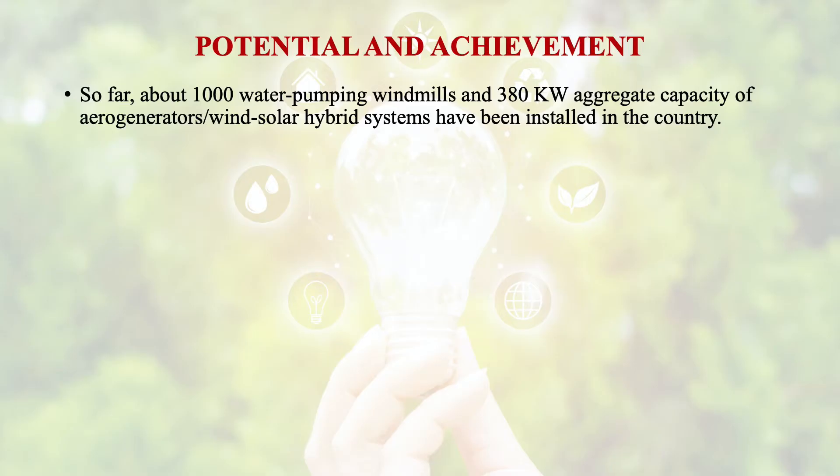Regarding achievements in India with these windmills and aerogenerators: about 1000 water pumping windmills and 380 kilowatt aggregate capacity of aerogenerators and wind-solar hybrid systems have been installed throughout the country.